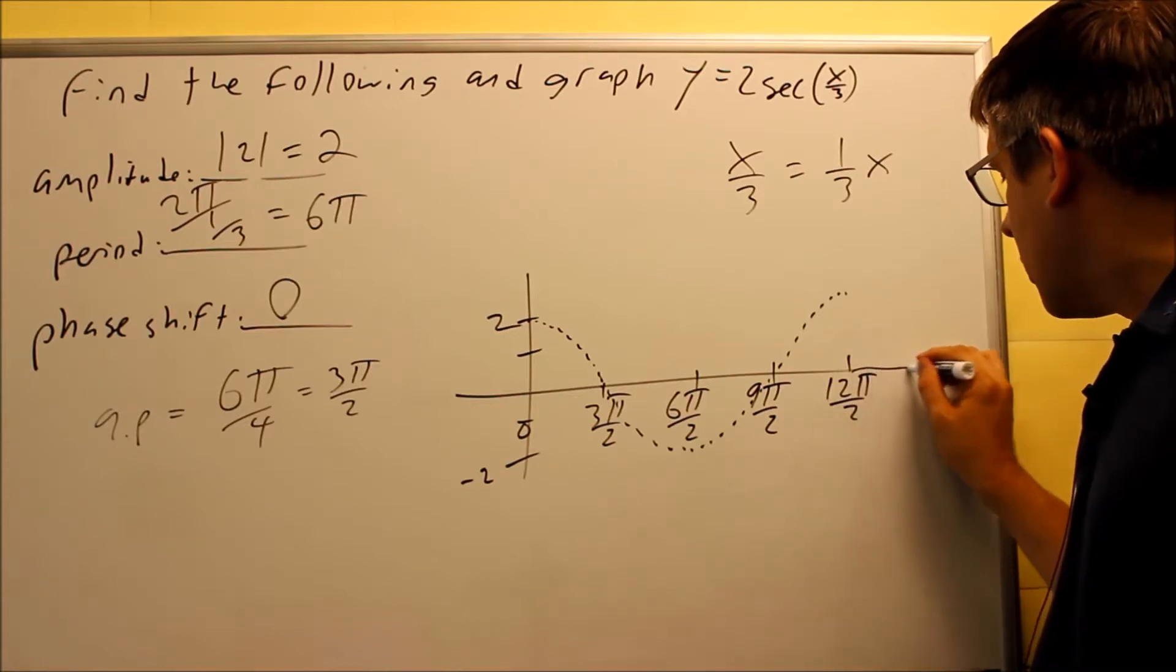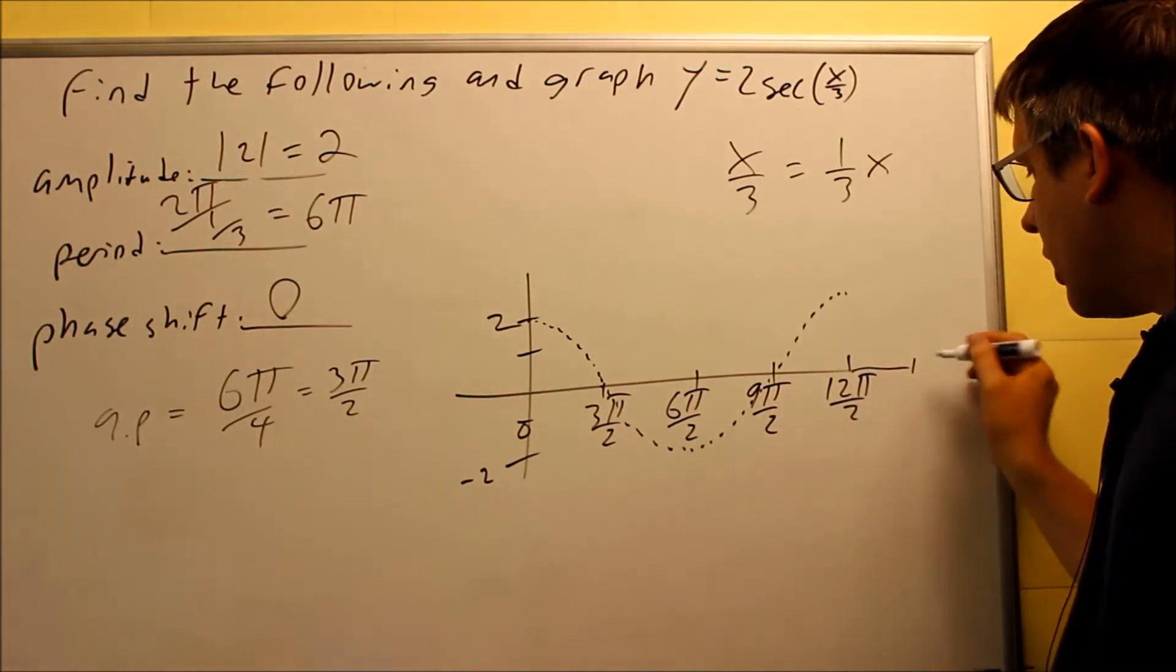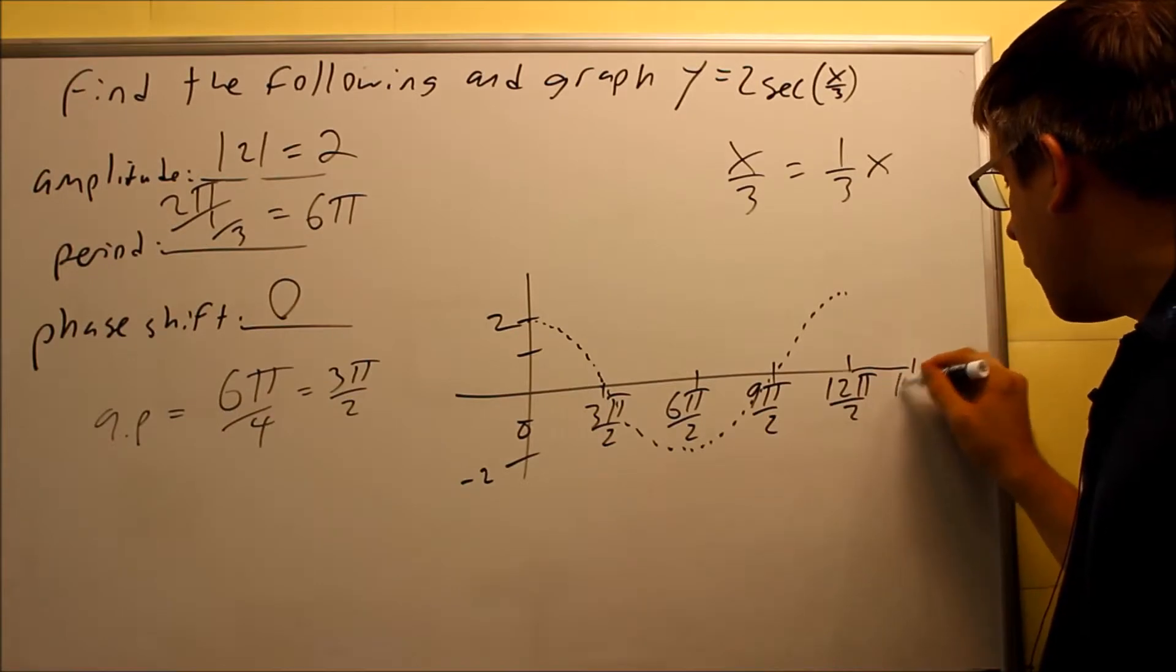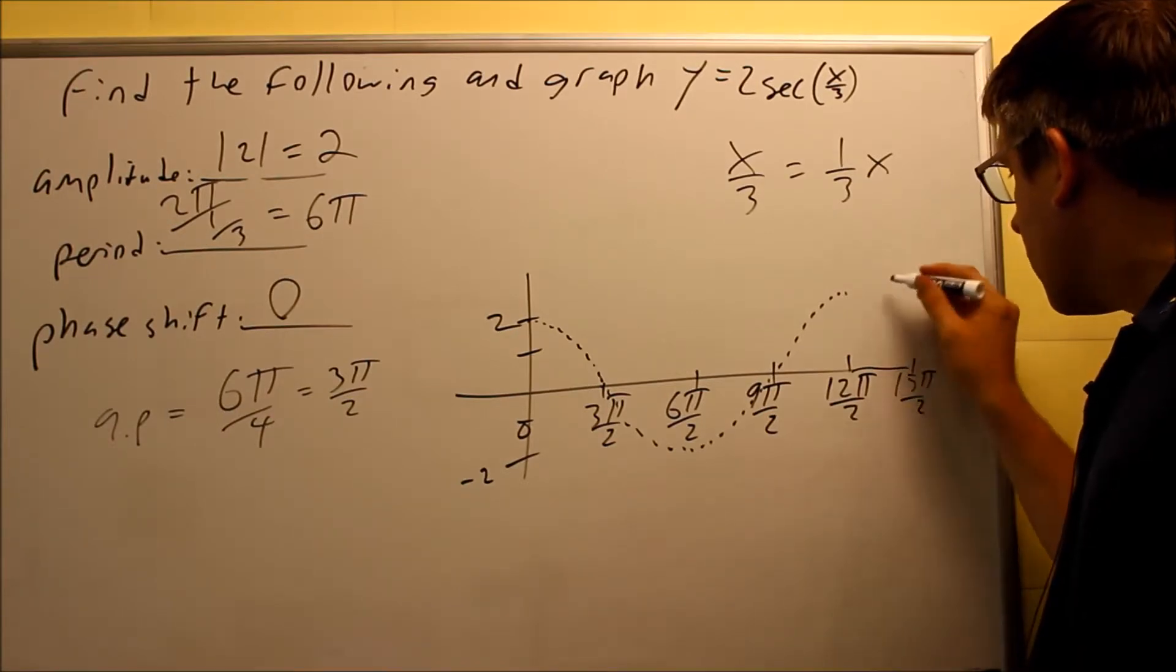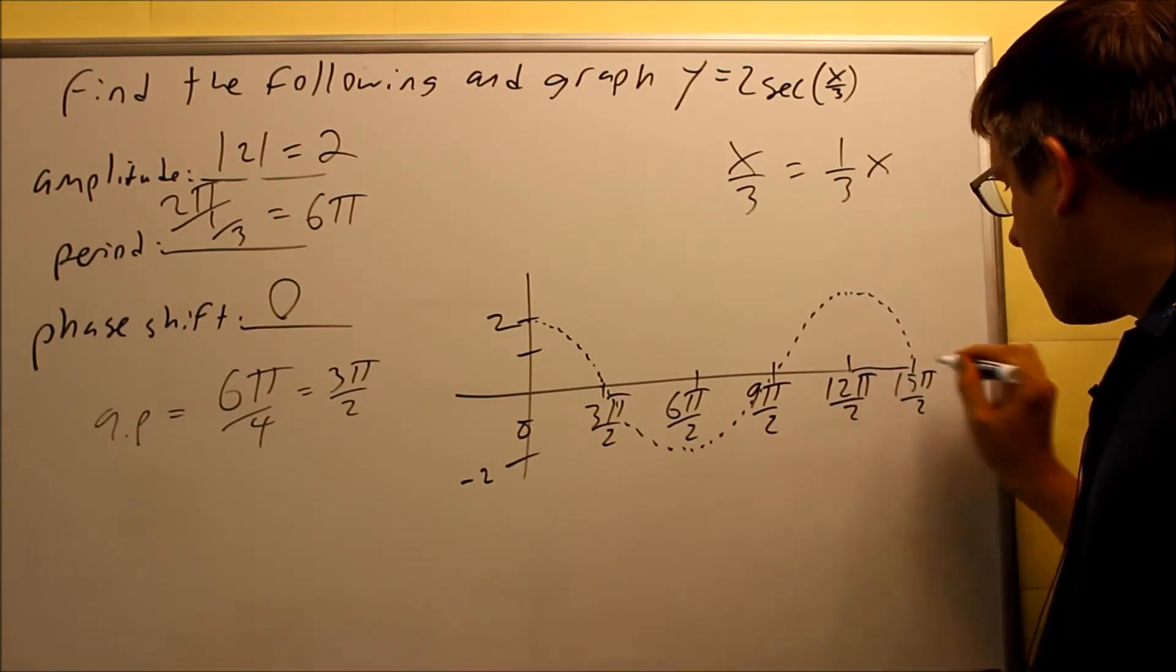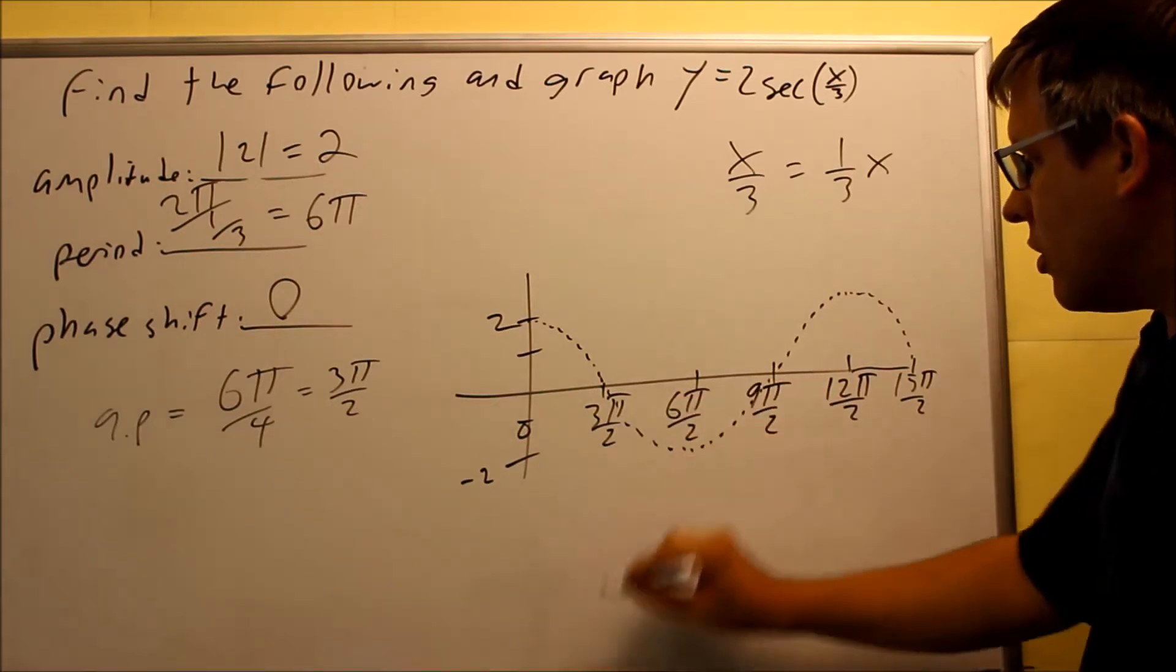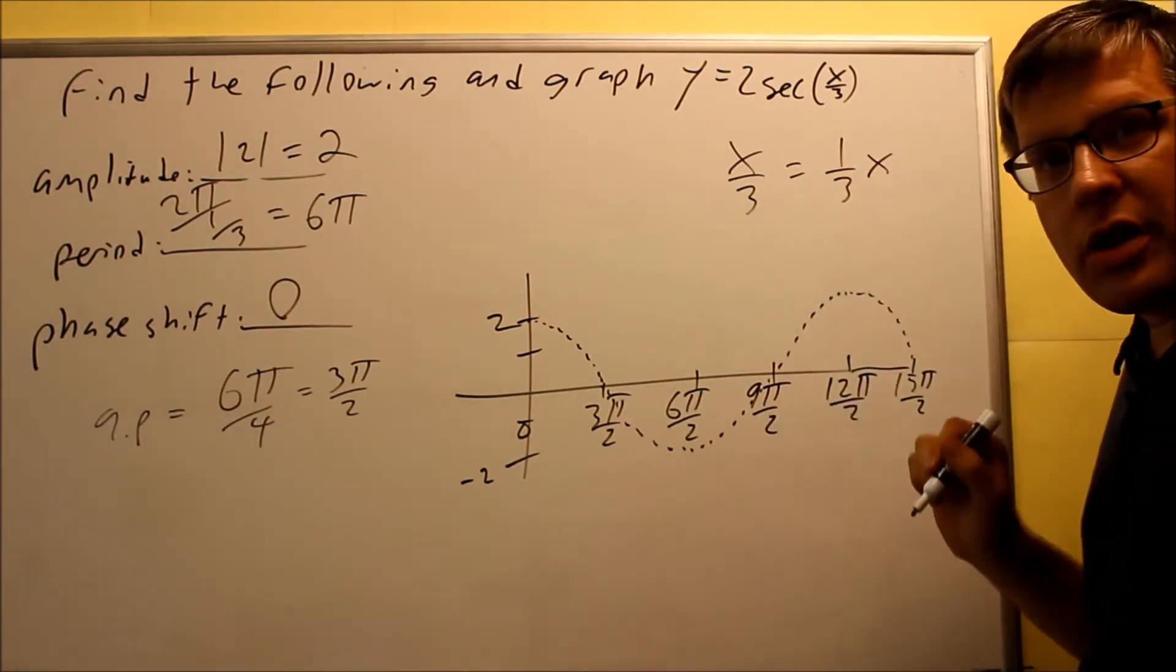And again, if you want to add one more key point here and add another 3π over 2, we can. We get 15π over 2, we can definitely do that, and we can bring this back down to here. That way we have a complete upside-down curve and a curve opening up like that.